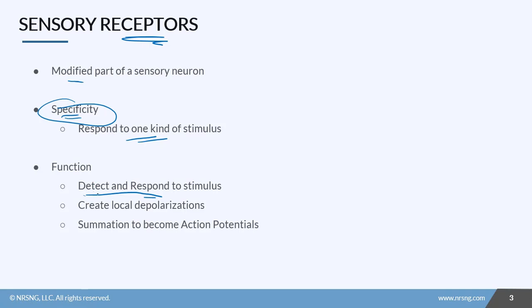So once it detects that stimulus, it starts these local depolarizations. We talk about those in the neuro section. And as those local depolarizations start adding together and summating, we actually start to see the development of an action potential. And that action potential is a signal that gets sent down the neuron to the brain and spinal cord for interpretation so that they can react to it. So that's your senses. That's the function of the sensory receptors.